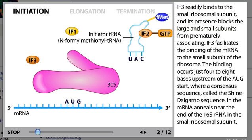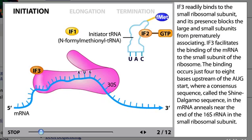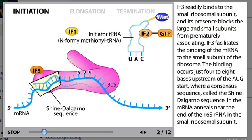IF3 readily binds to the small ribosomal subunit and its presence blocks the large and small subunits from prematurely associating. IF3 facilitates the binding of the mRNA to the small subunit of the ribosome. The binding occurs just four to eight bases upstream of the AUG start, where a consensus sequence called the Shine-Dalgarno sequence in the mRNA anneals near the end of the 16S ribosomal RNA in the small ribosomal subunit.